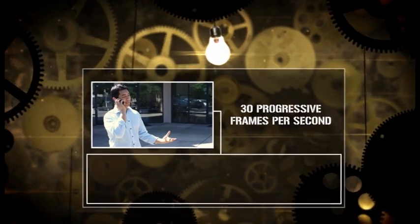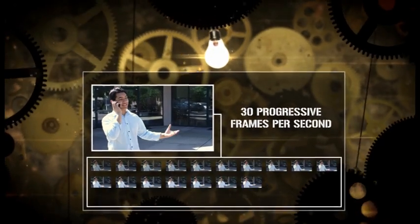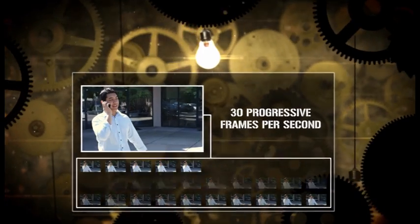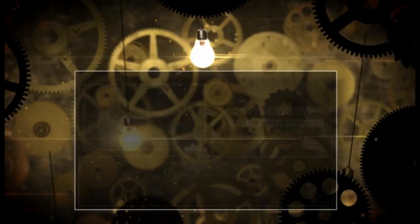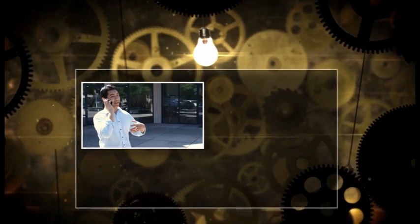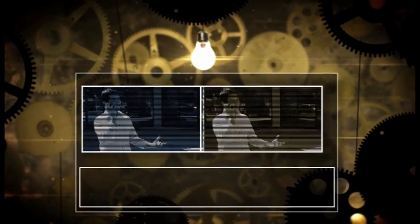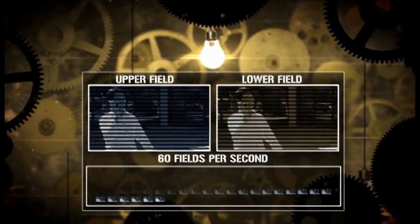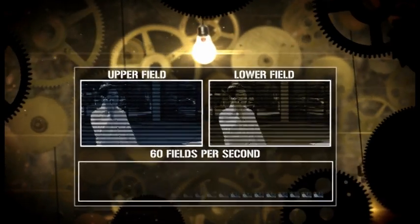Rather than sampling a full image 30 times per second and displaying all the horizontal lines of the television picture to form each frame, interlaced footage is made up of fields sampled at the faster rate of 60 times per second. In order to compensate for the faster sample rate, each field only contains half of the image.